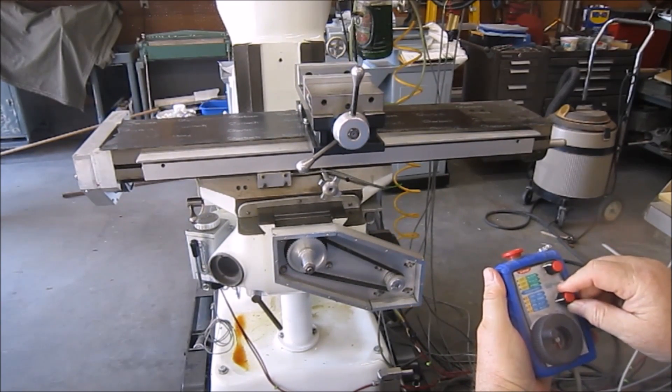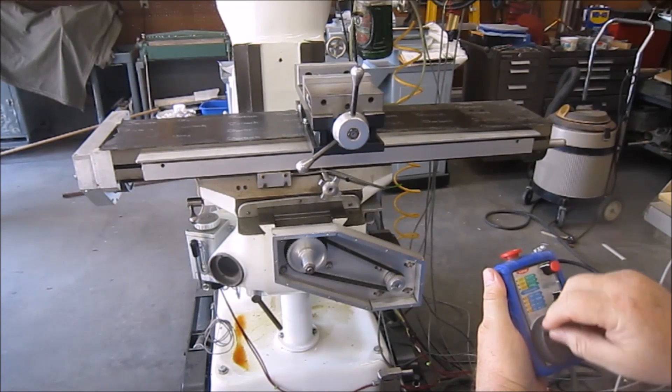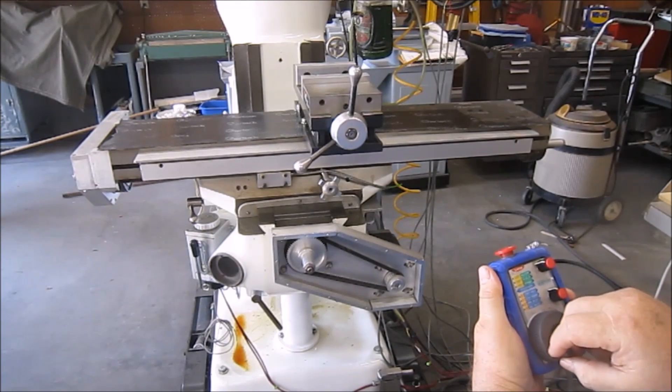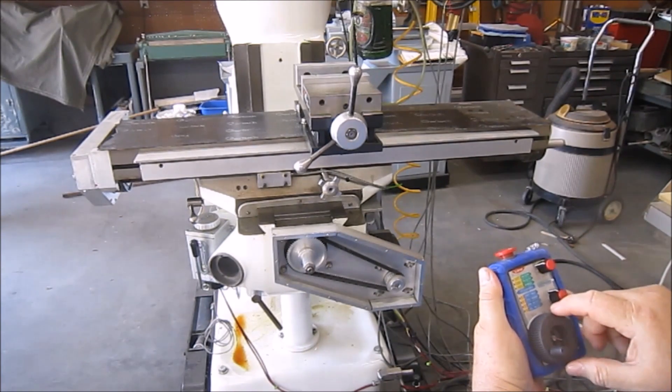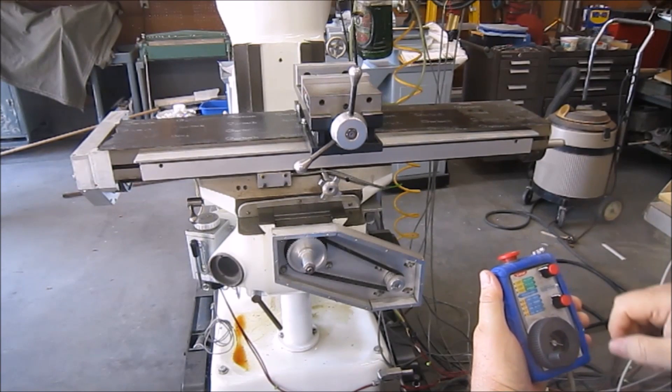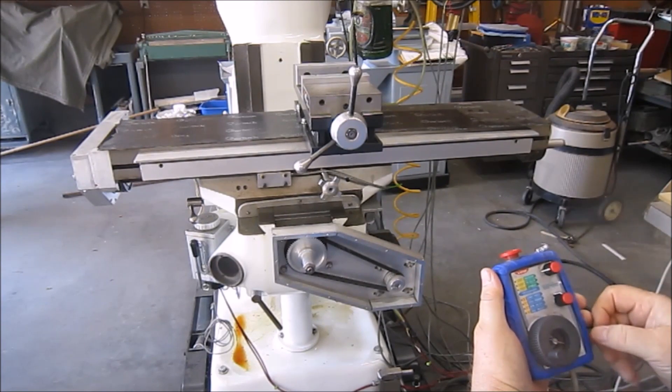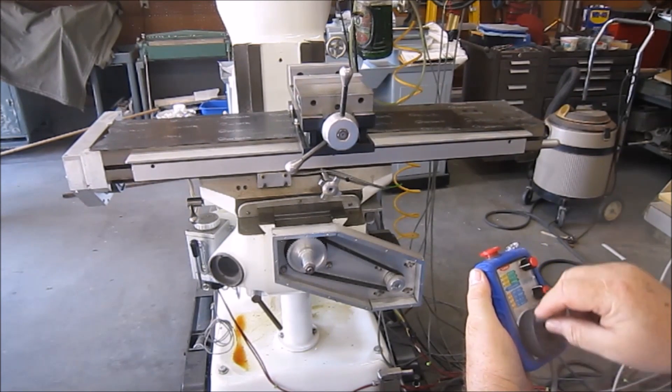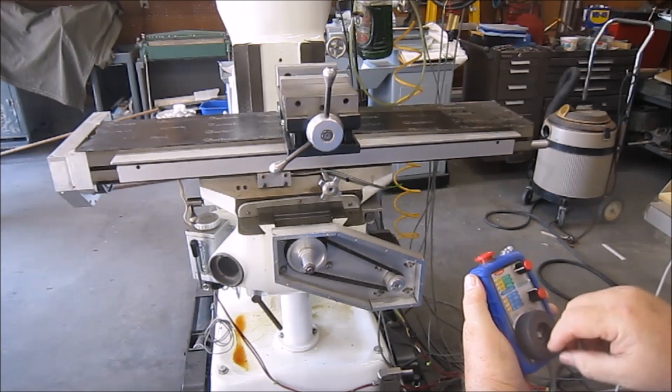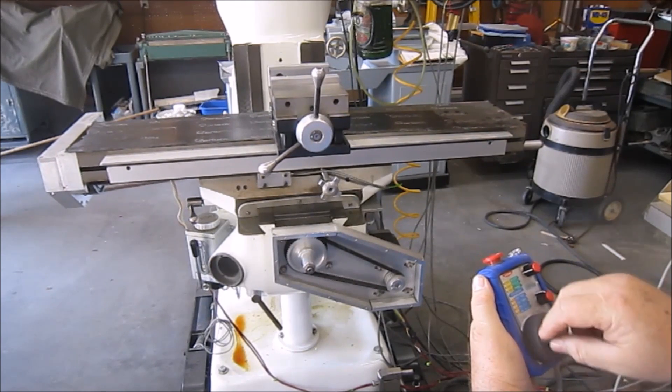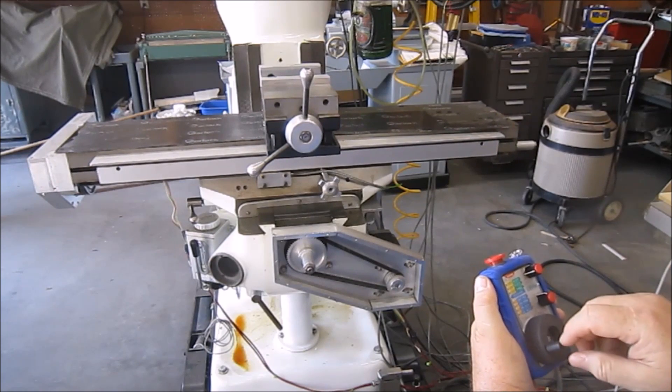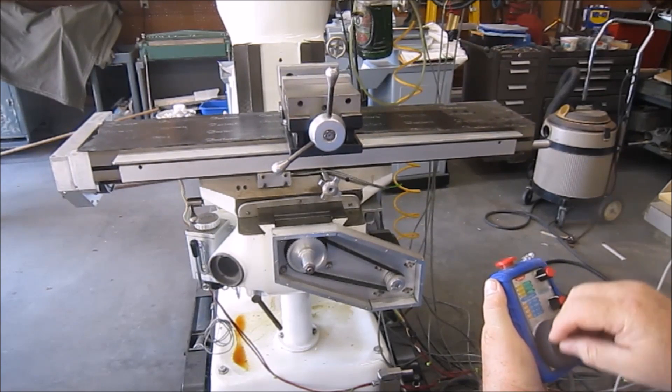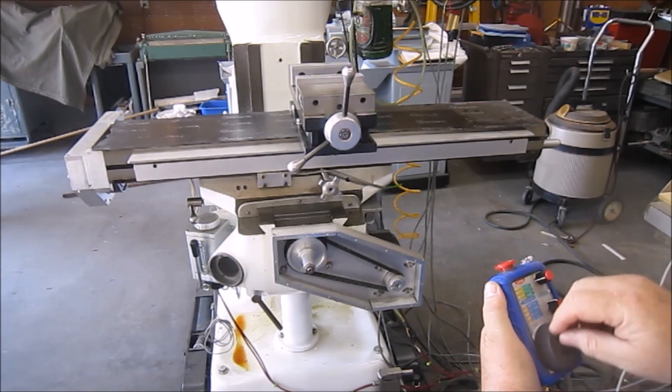So when you're using the edge finder to find the edge, you just come over a thousandth at a time until the edge finder clicks out, then you set your software to zero it. There's another way you can run it, which is called continuous mode. As long as I rotate the hand wheel, the table will slew at a specific rate depending on what you've set in the software, run in either direction. So that allows you to cut just like you would if you had a servo drive on your table or something like that. And that works on all the axes as well.